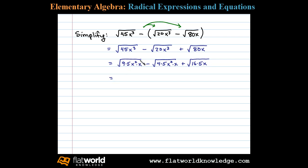At this point we can apply the product rule for radicals. The square root of 9 is 3 and the square root of x² is x, assuming x is positive. Inside the radical we're left with 5x. Minus square root of 4 is 2, and again square root of x² is x, and the radical here is 5x. Plus square root of 16 is 4 times the square root of 5x.